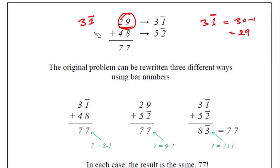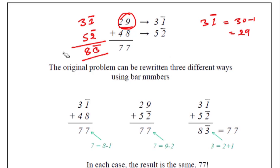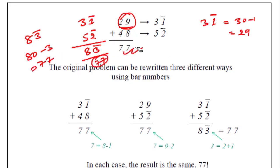So 31 bar, and this will be 52 bar. Now we are going to add them. 2 plus 1 is... so this is equal to 77. It means if you add the numbers like this, 9 plus 8 equals 7 with carry, and 4 plus 2 plus 1 is 7. So we get 77 both ways.